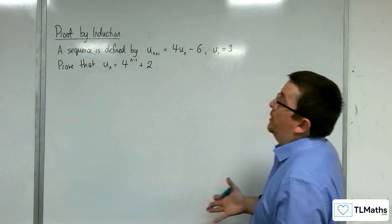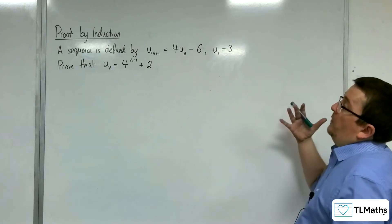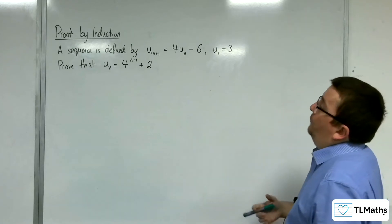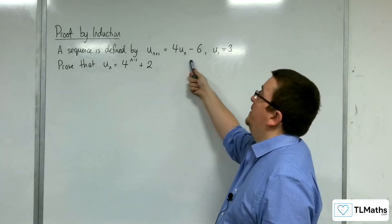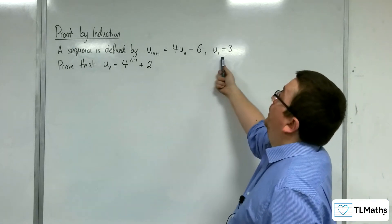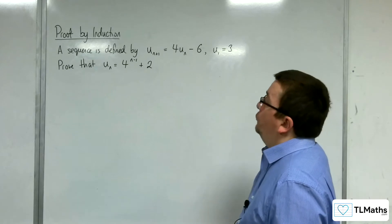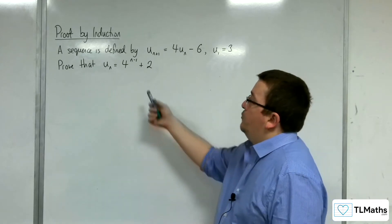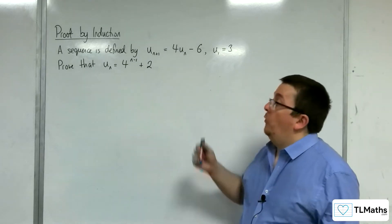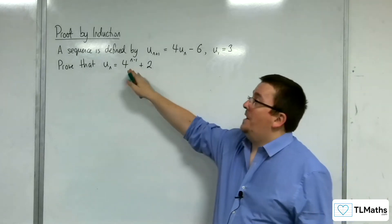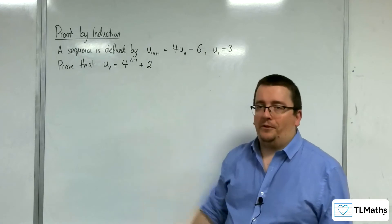In this proof by induction, we've got a sequence defined by u(n+1) = 4u(n) - 6, with u(1) = 3. We're going to prove that u(n) = 4^(n-1) + 2.